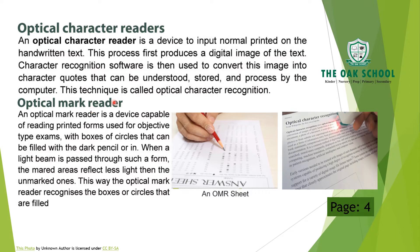Optical mark readers — aapko ek sheet milti hai jiske upar aapko sirf fill karna hota hai pencil se ya black pen se color karna hota hai. Ye optical mark reader forms hote hain. Ye ek machine hoti hai, uske andar jab sheet jati hai toh andar ek light beam guzarti hai. Woh roshni jahan jahan mark hua hoga, yani jahan black spots honge, wahan zyada tawajjah deti hai, aur jahan marks nahin honge wahan zyada tawajjah nahin deti. Is tarah se woh count karti hai kaun sa jawab sahi hai aur kaun sa nahin. Is tarah optical mark reader machine kaam karti hai.